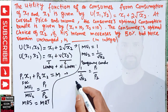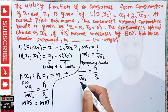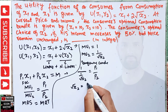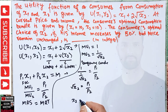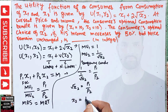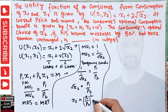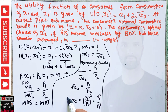Solving for x2: squaring both sides of √x2 = p1/p2 gives x2 = (p1/p2)², which can be written as x2 = p1²/p2². This is the Marshallian (ordinary) demand function for good x2.